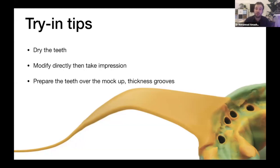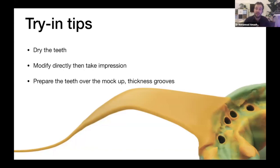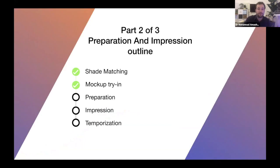Get 80% of the way to the final result, then take an alginate impression. Why take alginate? Because this represents the approved temporary result — it gives your lab something similar to aim for. Don't skip this step. After getting approval for the temporary mock-up, prepare over the teeth without removing the mock-up — keep it in place. Make thickness grooves on centrals, laterals, canines, and premolars. This gives you an idea of how thick your veneers will be, and you can make the grooves accordingly. That's everything for mock-up.